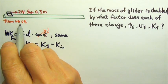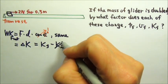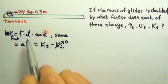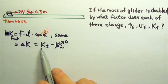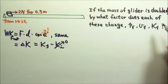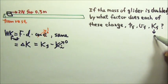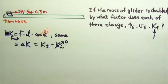Since the glider starts from rest, the initial kinetic energy is 0. So the work done stays the same means the final kinetic energy also stays the same. So it changes by a factor of 1.